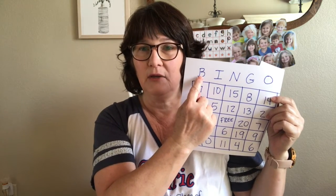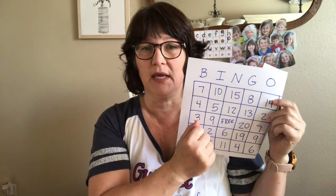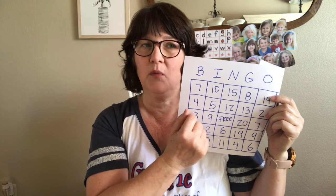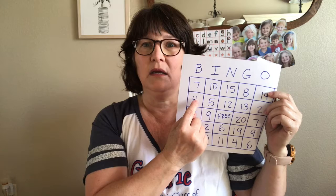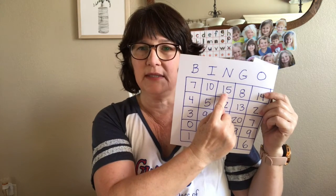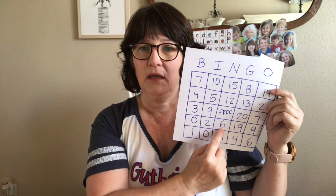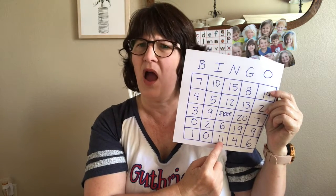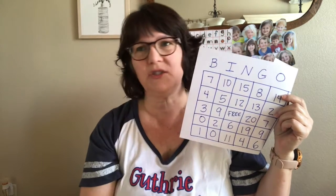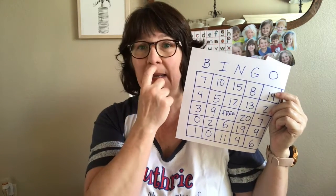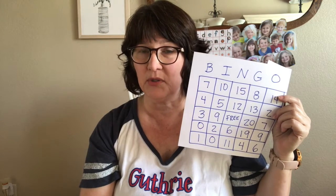Someone will call out B4, so you're going to look under column B and look down — is that a four? Nope. Is that a four? Yes! So you can put a coin or a cheerio on there so you can use the game again. Don't mark it out. Then someone will say N7. Let's look — is that a seven? Nope. There's a free space — you can put your cheerio or coin on that. Is that a seven? No seven — that means you just didn't have an N7. Next time maybe your board will have the right combination of letters and numbers.